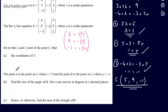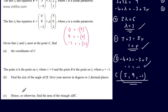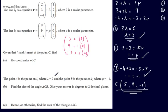In the next part, point A is on L1 where λ = 0, and point B is on L2 where μ = -1. Part B asks us to find the size of angle ACB in degrees to 2 decimal places. Part C then asks us to find the area of triangle ABC. I'm going to look at this as two distinct parts.